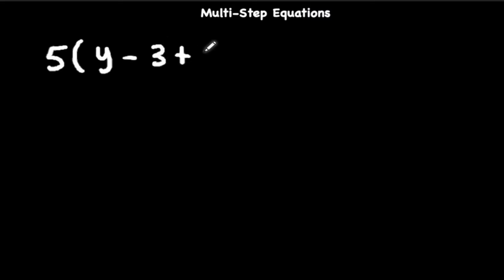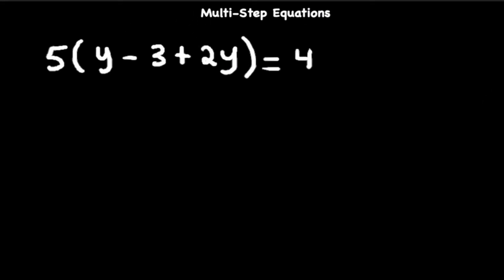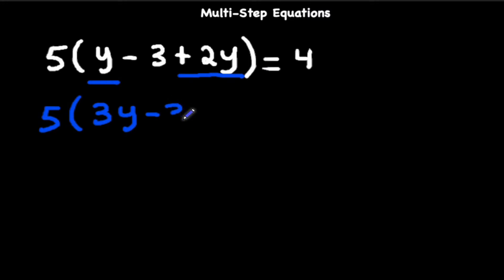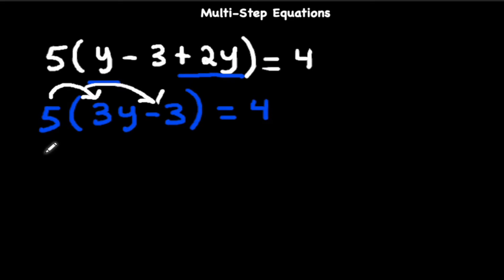Now let's look at: 5 times the quantity y minus 3 plus 2y equals 4. First, let's combine like terms inside the parentheses — we have y plus 2y, which is 3y. So we have 5 times the quantity 3y minus 3 equals 4. Now let's distribute the 5 to each term: 5 times 3y is 15y, and 5 times negative 3 is negative 15, equals 4.